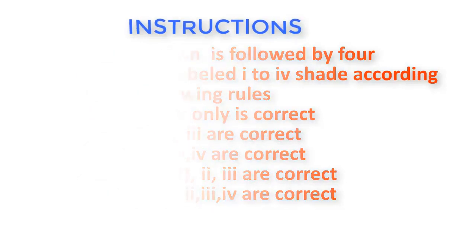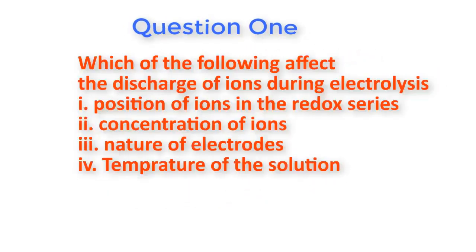Now let me read out the questions to you. Question number one: Which of the following affect the discharge of ions during electrolysis? One: Position of ions in the redox series. Two: Concentration of ions. Three: Nature of electrode. Four: Temperature of the solution.